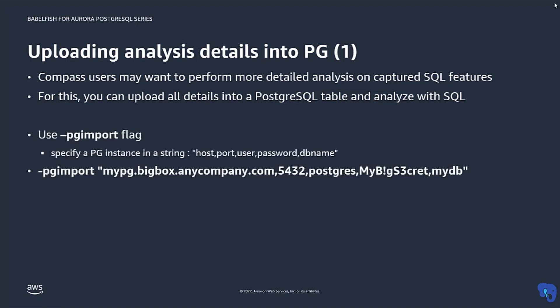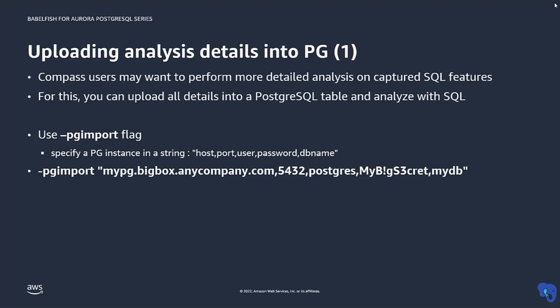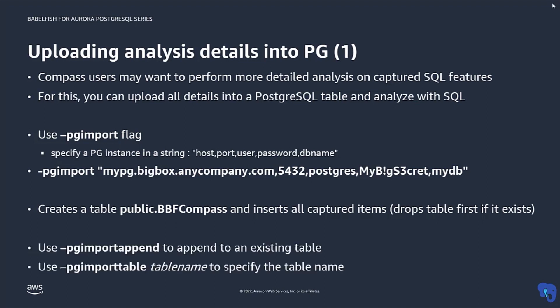To upload the data, use the flag pgimport and specify the Postgres endpoint, username and password, and the Postgres database as a comma-separated string as shown here. The pgimport flag creates a table named bbfcompass in the public schema and copies the analysis details into it. To append to an existing table, use the flag pgimportappend. You can specify a different table name with the flag pgimporttable.